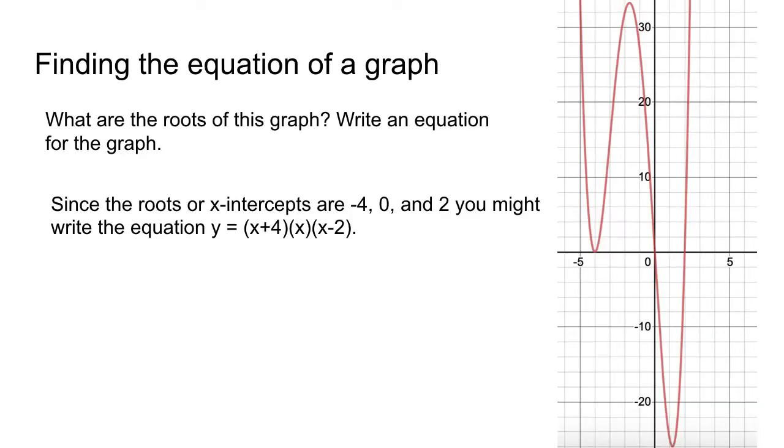Here we have a graph that bounces off the x-axis at negative 4. We know the roots here are (-4, 0), (0, 0), and (2, 0). So we might think our equation is (x + 4), that's for the factor at negative 4, times x, that gives us the (0, 0) point, and times (x - 2), which gives us the (2, 0) point.